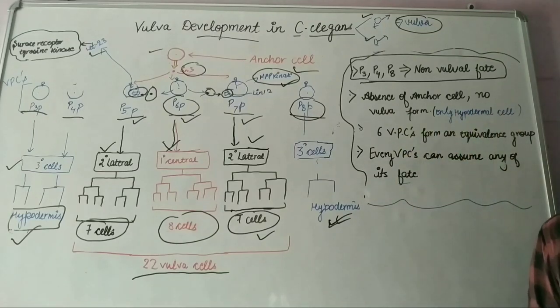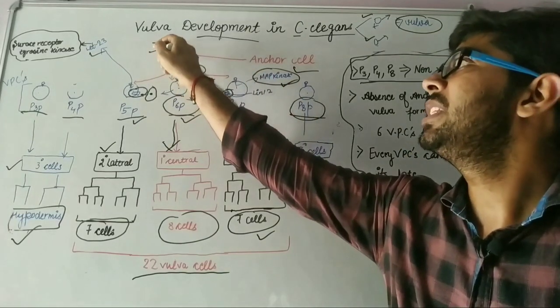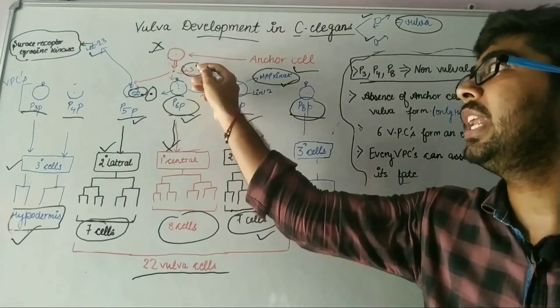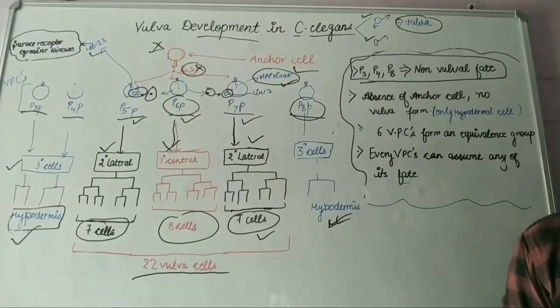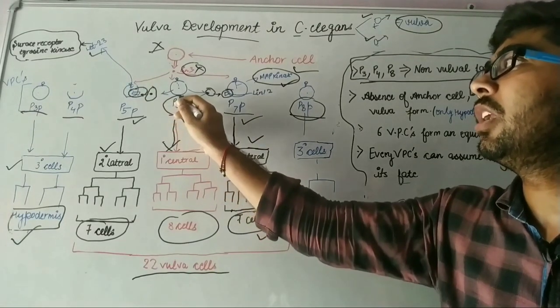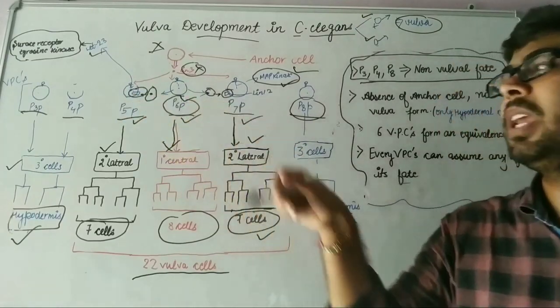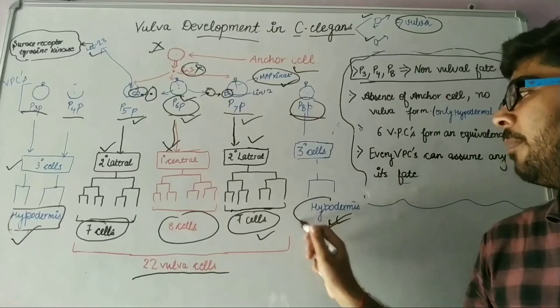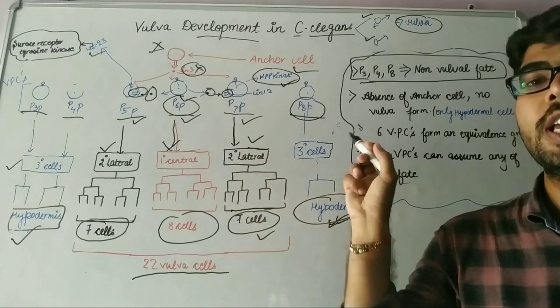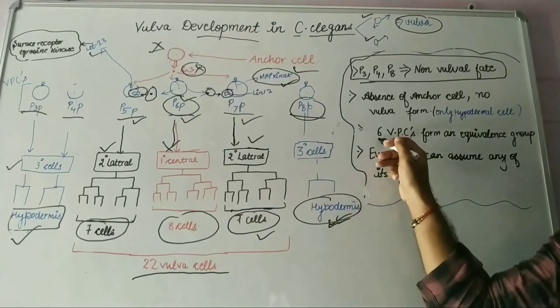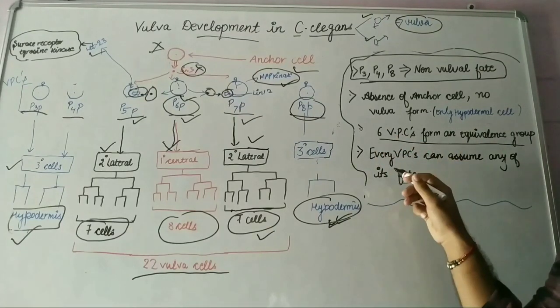When there is absence of anchor cell, it means when anchor cell is not produced, then there is not any LIN3 protein found. And when LIN3 protein is not found, then there will be no signaling occur in P6P, P5P, and P7P and they generate hypodermal cells by all three vulva precursor cells. The six VPCs form an equivalence group.